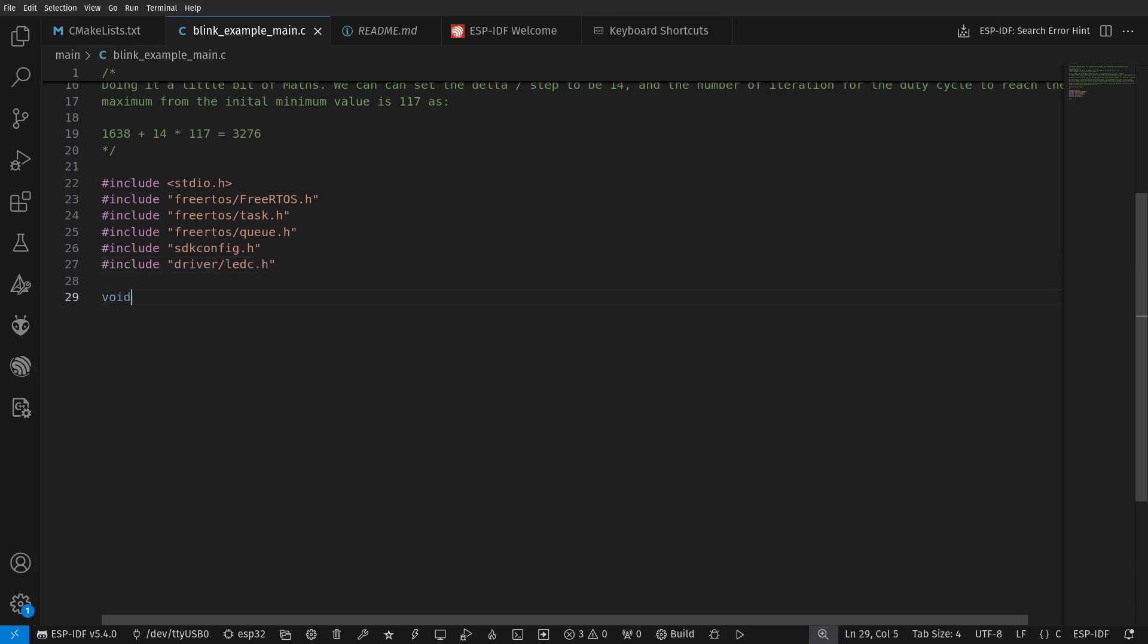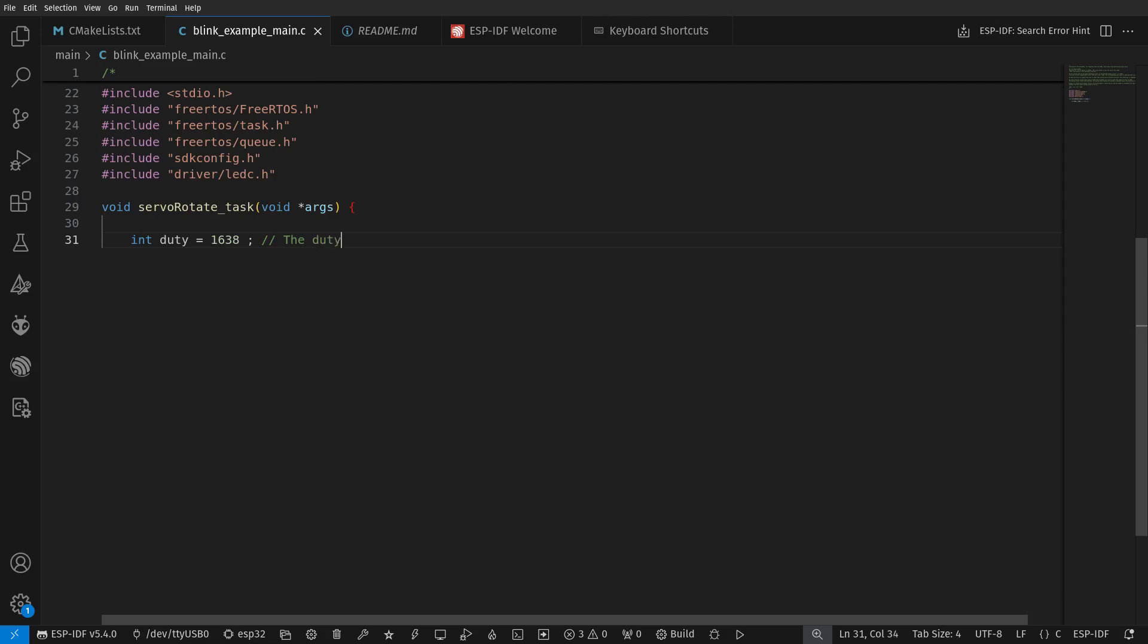To implement this in our program, the first step is to include our header file for LEDC. Inside our task function, we set up some variables including the initial duty, the step, the total number of cycles, and the amount of time per iteration.